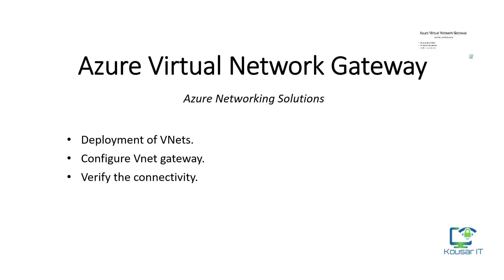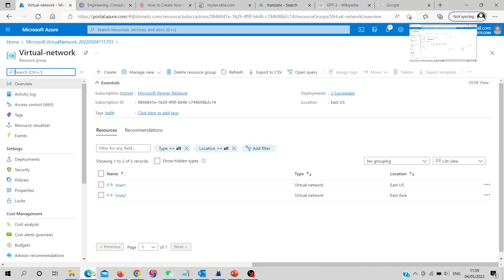Welcome to this tutorial on Azure Virtual Network Gateway. I will deploy two virtual network gateways, configure them, and use virtual machines to check connectivity between two VNets via private IP. In the Azure portal, I have a resource group where I already created two virtual networks.